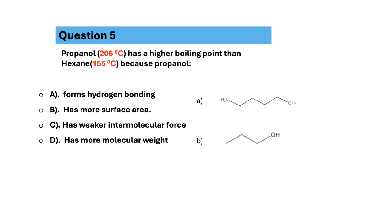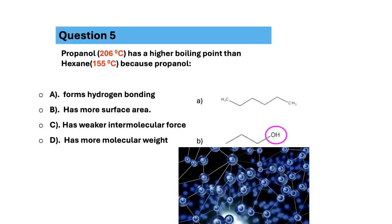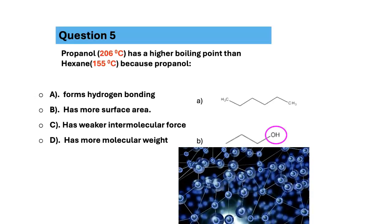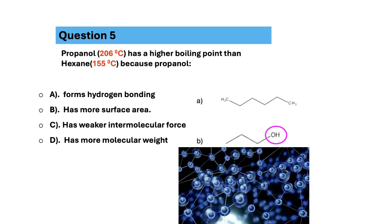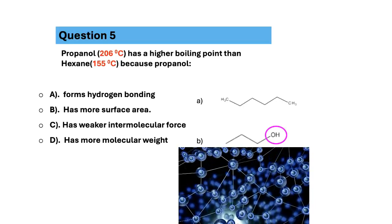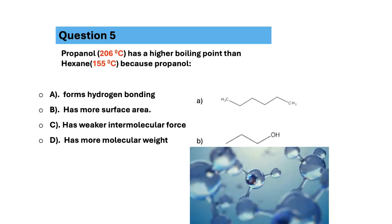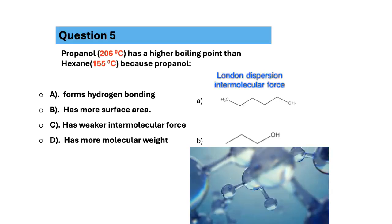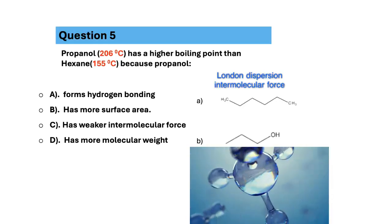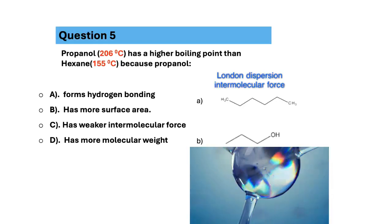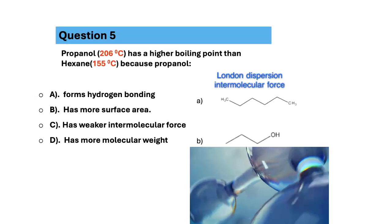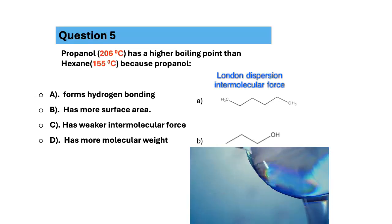Looking at the structures, propanol has an alcohol functional group that forms a strong intermolecular hydrogen bonding with each other, increasing the boiling point. On the other hand, hexane has only London dispersion intermolecular force, which is significantly weaker than hydrogen bonding.